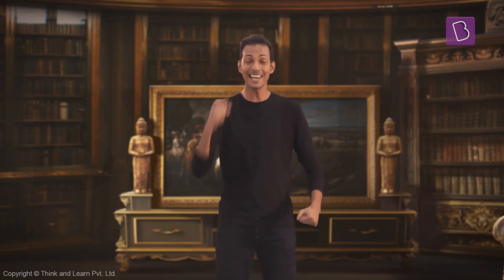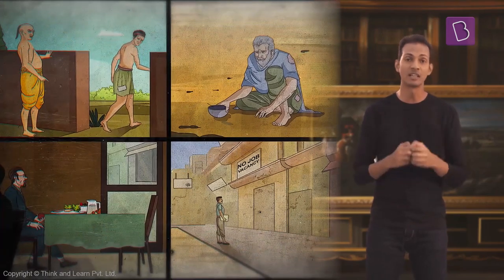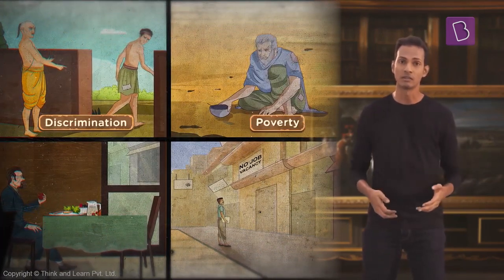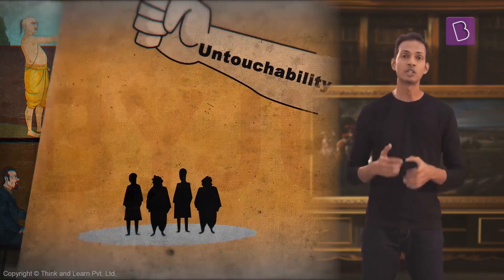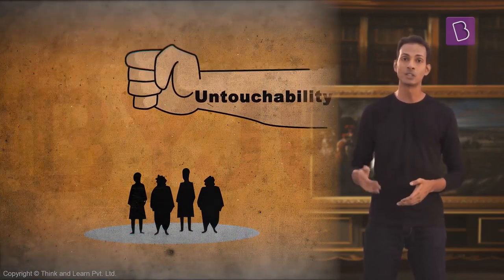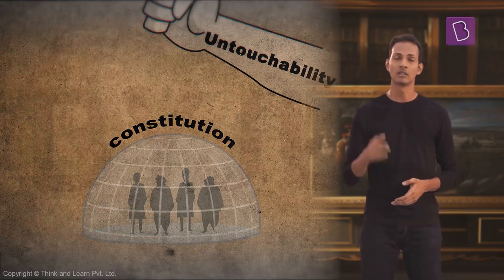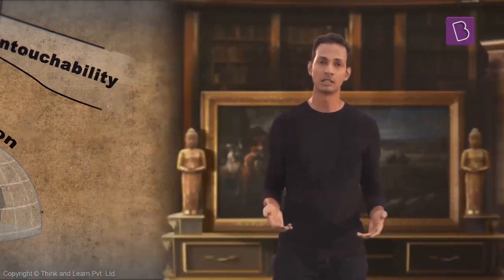After so many years of independence, how much has the country progressed? Has the country achieved its goals so far? Yes and no. We are still suffering from discrimination, poverty, economic inequality and issues like unemployment. Despite having constitutional rules and measures against untouchability, the concept is still prevalent in the country. In many parts of the country, people from lower castes are still subject to violence and discrimination.